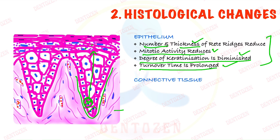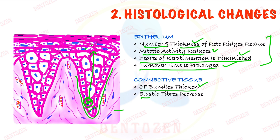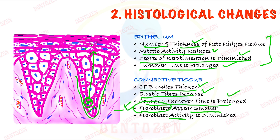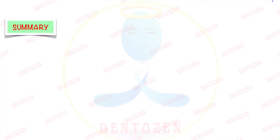In the connective tissue, the collagen fiber bundles thicken while elastic fibers decrease. Collagen turnover time is also prolonged. Fibroblast cells, which form the fibers, appear smaller and their activity is diminished. Those are the histological changes within both the epithelium and the connective tissue.